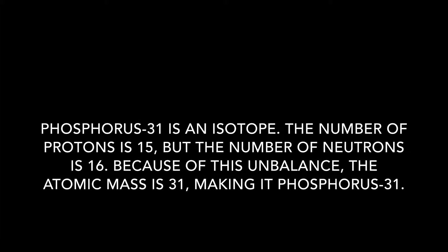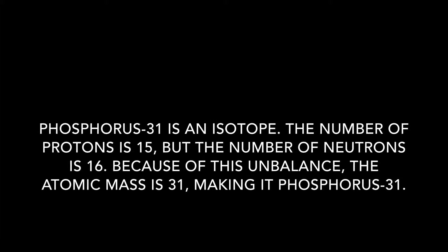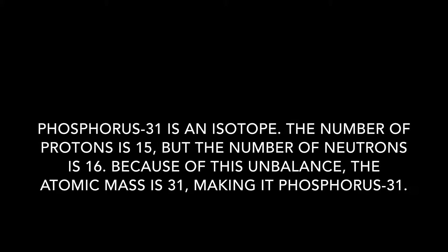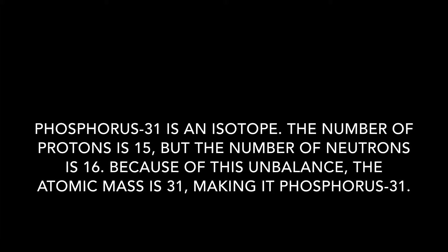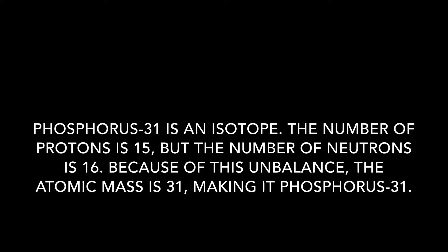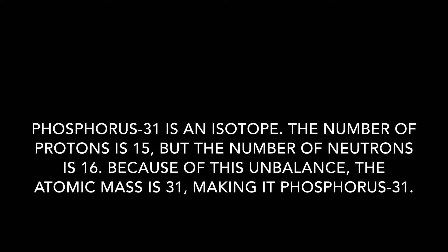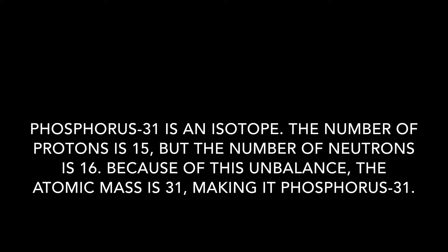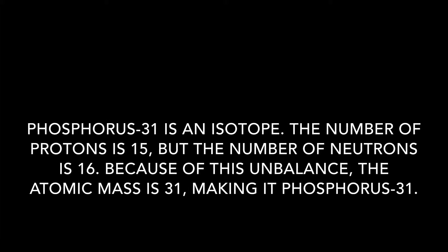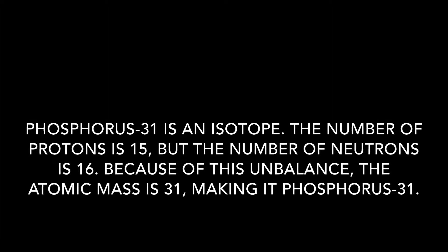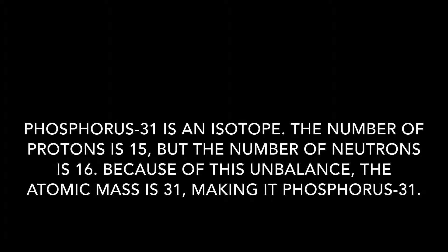Phosphorus 31 is an isotope. The number of protons is 15, but the number of neutrons is 16. Because of this unbalance, the atomic mass is 31, making it Phosphorus 31.